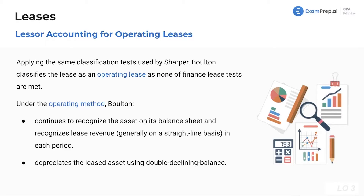Both parties use the operating method because none of the criteria were met. If one of the criteria is met, then the lessee uses the finance lease method, and then the lessor will either use the sales type or the direct method — we'll see those later. Generally, it's going to be the sales type, which is just a further classification of the finance lease.